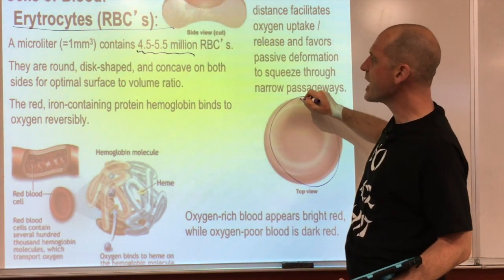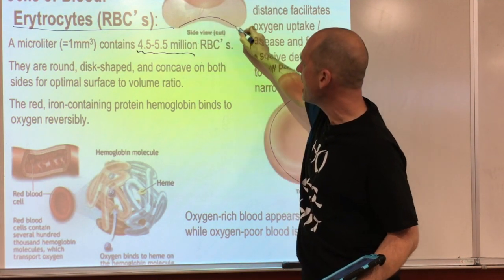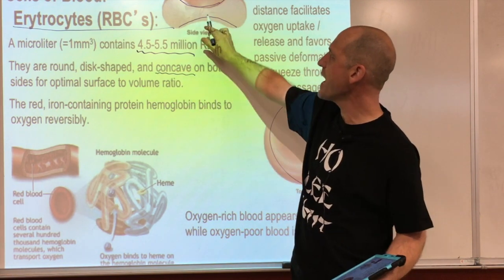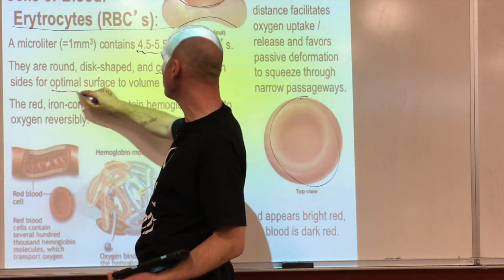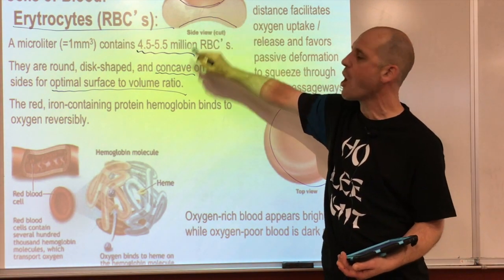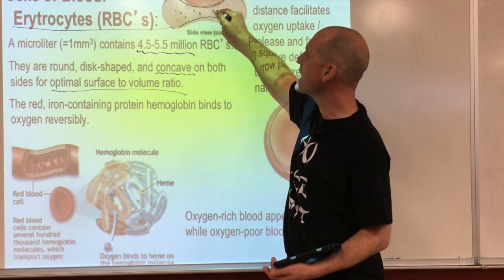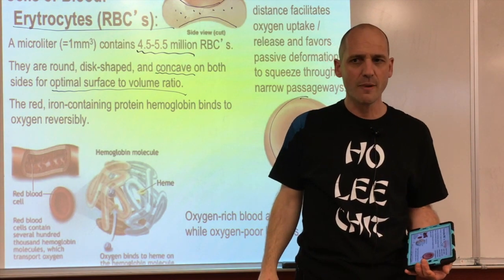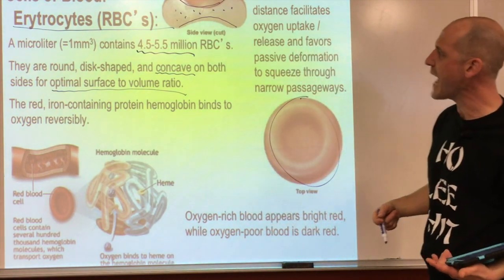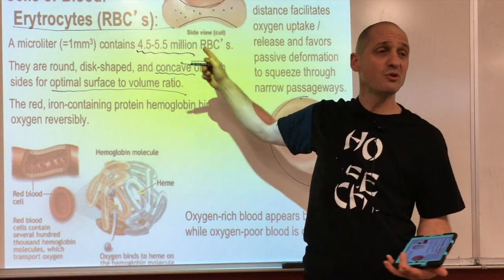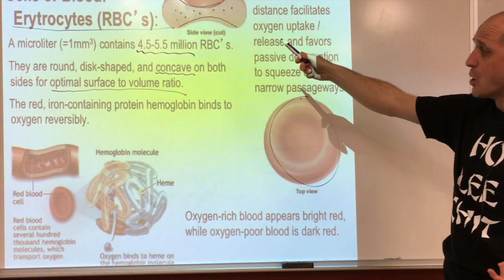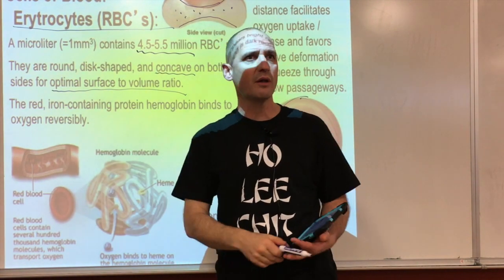Red blood cells are round - disc-shaped with both sides going inward, so both sides of the disc are concave. This gives an optimal surface-to-volume ratio, meaning everywhere on the cell the distance that oxygen has to travel is about the same. The amount of surface relative to the volume inside is optimum for gas exchange.